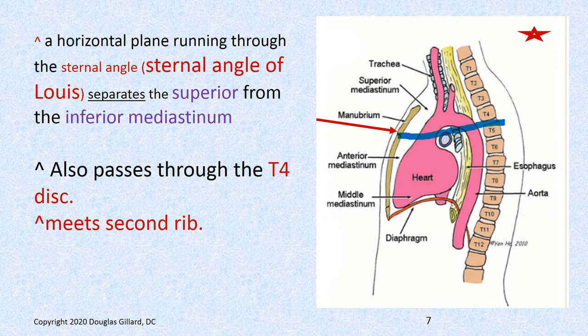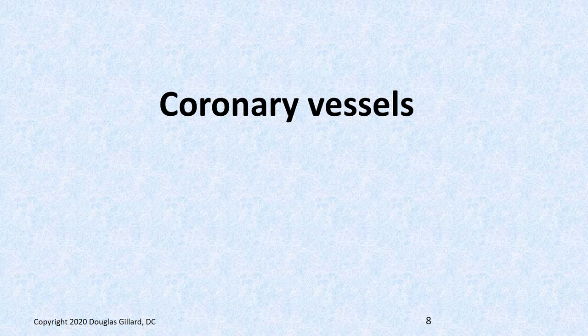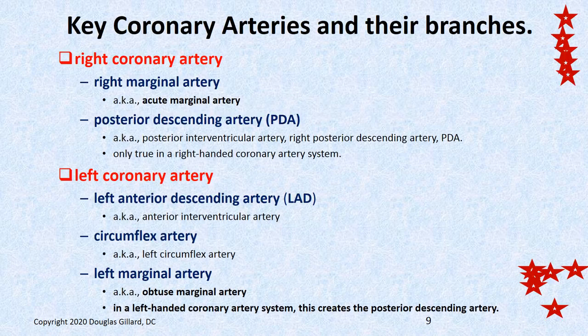We can also use that sternal angle — if you find the sternal angle and palpate straight out, that'll be the second rib. Coronary vessels — you should know these as well. There's a right coronary artery and left coronary artery — those are the main pipes — and those come off the trunk of the ascending aorta.